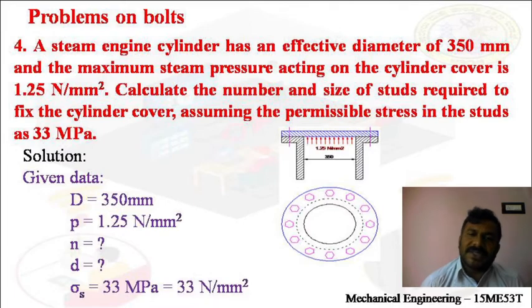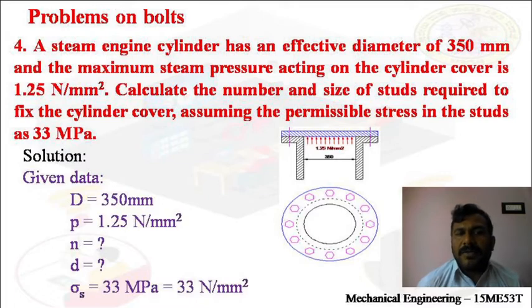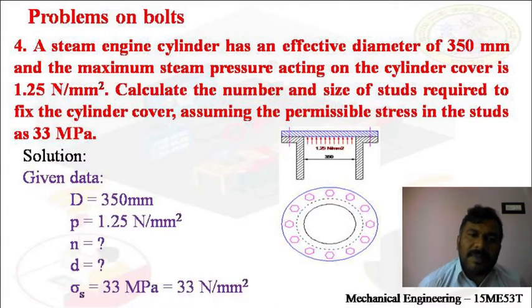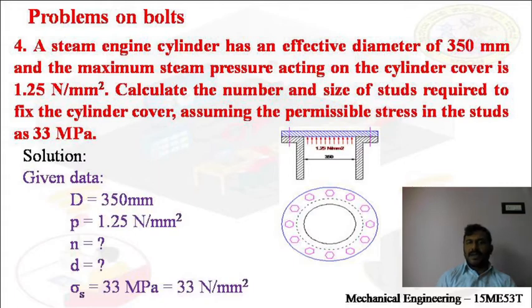Before solving the problem, please read it carefully and analyze it. Here, I will record the given data. Effective diameter, that means diameter of the cylinder, is 350 mm. The maximum steam pressure acting on the cylinder cover is 1.25 Newton per mm square, that is P = 1.25 N/mm². We have to calculate two unknown parameters: number of studs required and the diameter of the stud required.